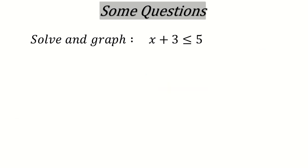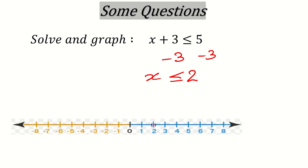Another question: x plus 3 less than or equal to 5. Using the same method, minus 3 on both sides. So x is less than or equal to 5 minus 3, which is 2. Less than or equal to 2 — we have equal to, so make a filled circle, and then less than means the line goes to the left-hand side.